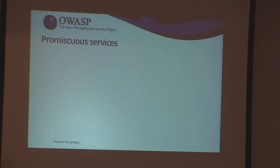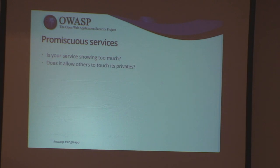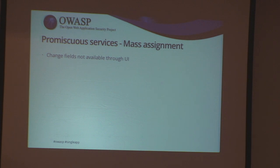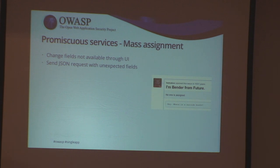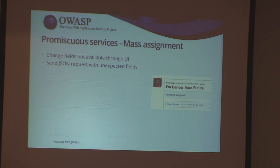Another thing is what I call promiscuous services — when we're moving from JSON onto the back-end server or the other way around. A promiscuous service is either showing too much or allowing others to touch their privates, which is a bad thing. The first issue is mass assignment or over-posting — we can change things we're not supposed to be able to change through the UI by sending a JSON request with unexpected fields. Igor Homakov did this on GitHub — he opened an issue dated 1001 years in the future saying 'I'm Bender from the future', which created quite a stir.